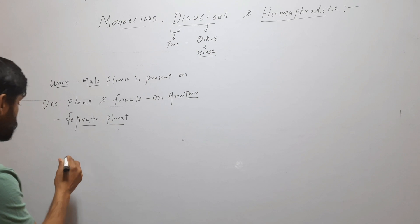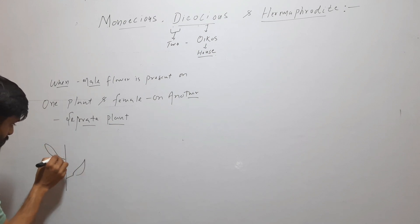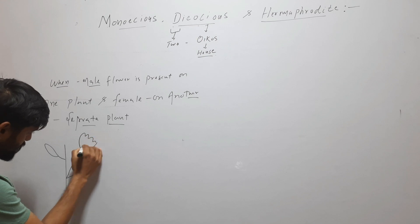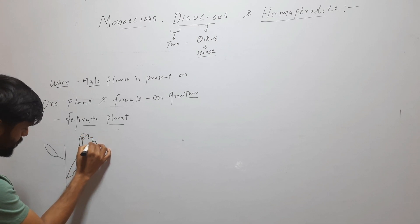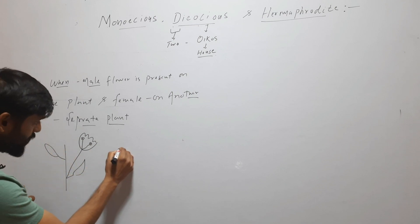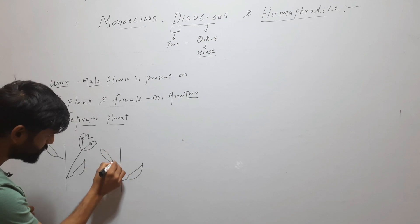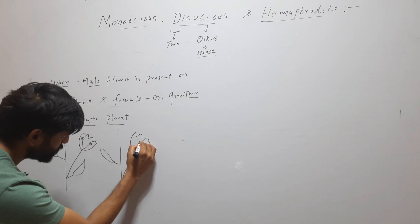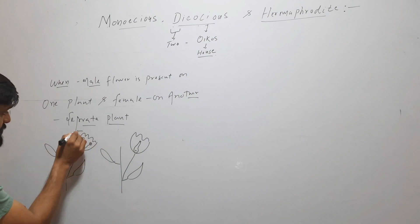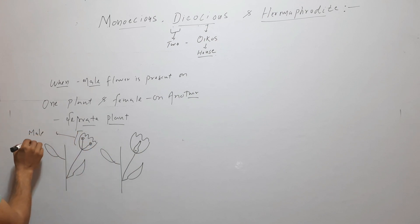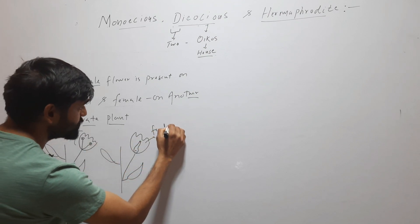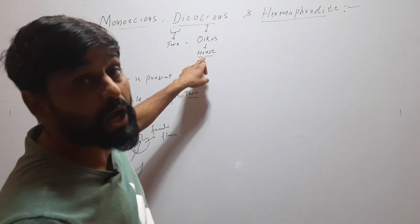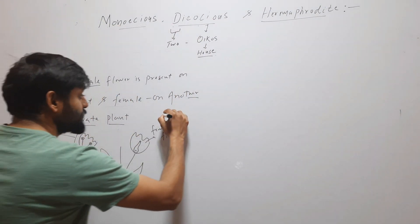They are present on different plants. Suppose here I am taking a plant — this is one plant and this is a flower. On this plant only male flower is present, and female flower is present on a different plant. So this is female flower and this is male flower. Both, as you can see, are present on different plants — means two different houses, two different places. This is called Dioecious.